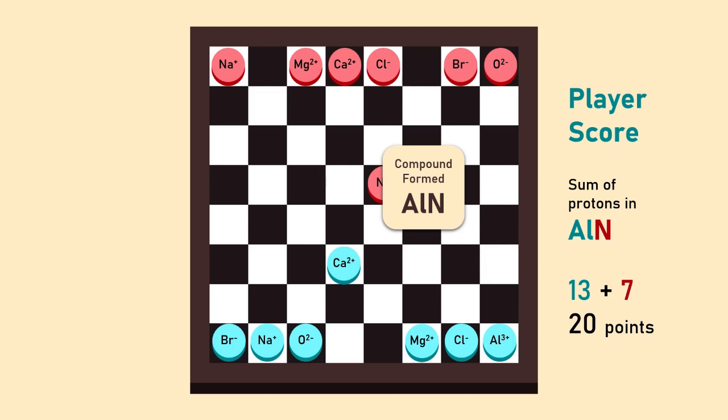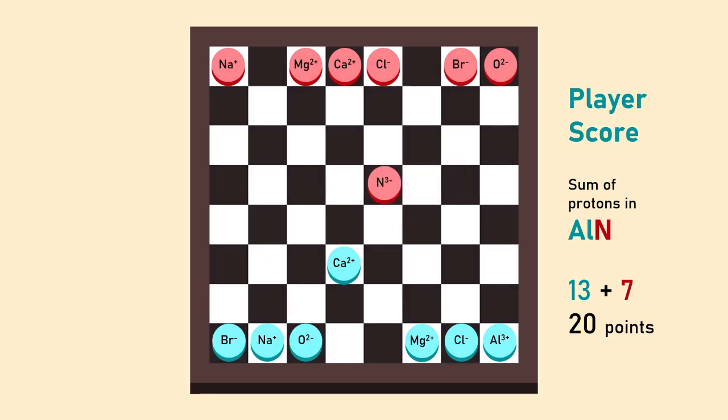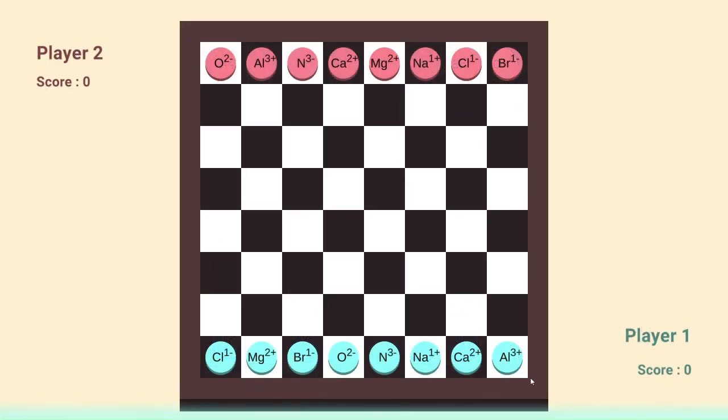After the compound is formed, both the ions are removed from the game board and the play continues. The game continues until all the ions form compounds, and at the end the player with the maximum score is declared the winner.